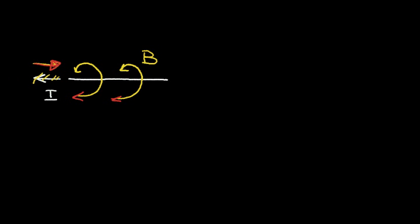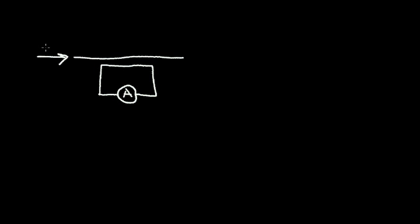Another interesting thing happens. Let's take another piece of wire and bring in a second wire very close to this first wire. I'll put an ammeter in this second wire, which we'll call A for ammeter. Now, if I induce a current change into this top wire — I'll call it delta I — as I change the current, the magnetic field in the top wire changes, and this changing magnetic field induces a current in the bottom wire.